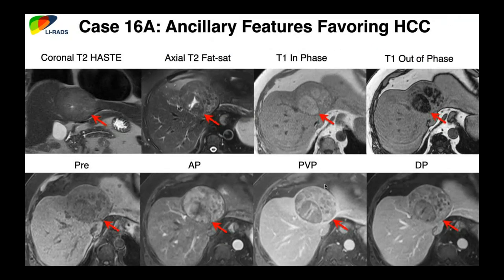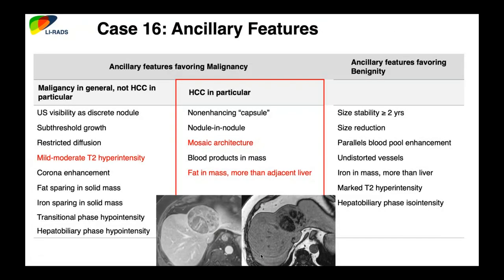Here's a nice example from Dr. Tang of fat within an observation — signal drop on out-of-phase images — combined with mosaic architecture on arterial phase, which we often hear about but don't often see. It's arterially enhancing with washout, so clearly LR5. The fat content and mosaic perfusion are nice ancillary features, but regardless of those, it remains LR5.